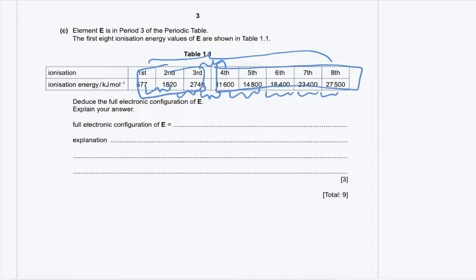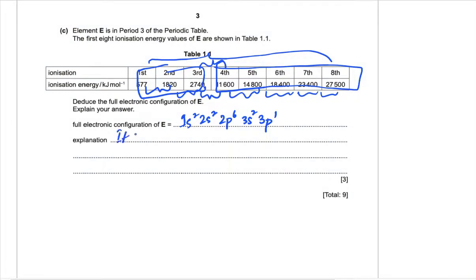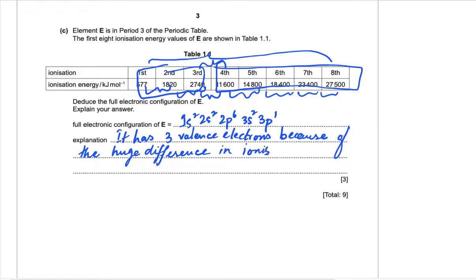We can deduce that this element has three valence electrons, hence it is in group 3. It is already mentioned to be in period 3. Period 3 and group 3 makes aluminum, which has the configuration 1s², 2s², 2p⁶, 3s², 3p¹. Wherever you see a huge jump in ionization energies, that indicates a change in shell — you are moving towards an inner shell.